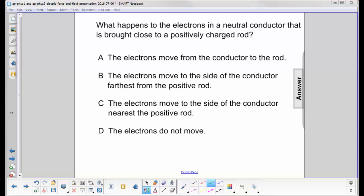What happens to the electrons in a neutral conductor that is brought close to a positively charged rod? So here's our neutral conductor, and here is a positively charged rod.